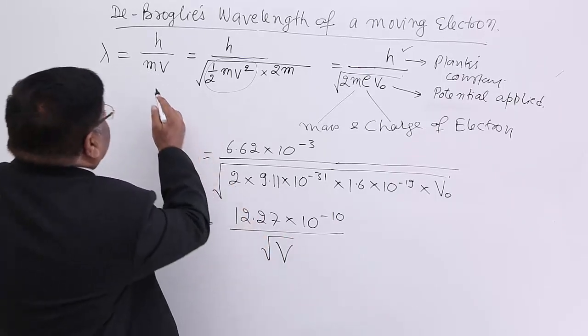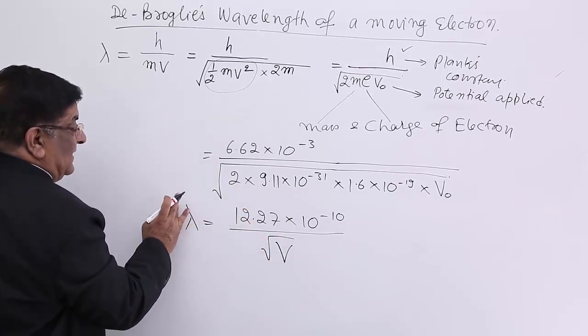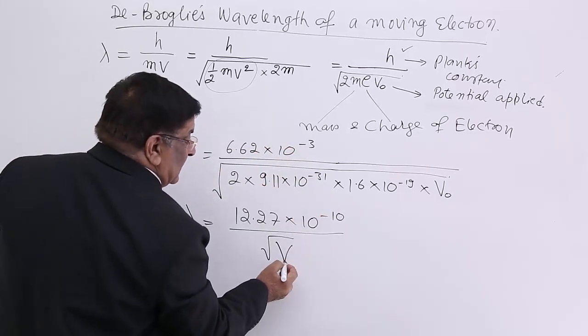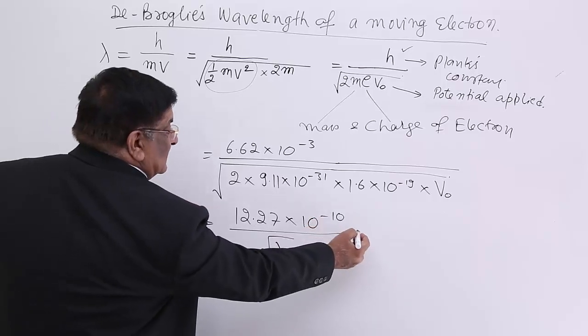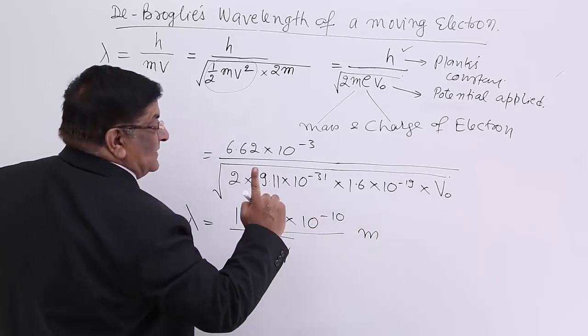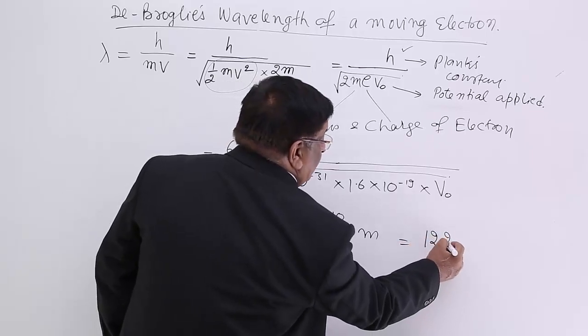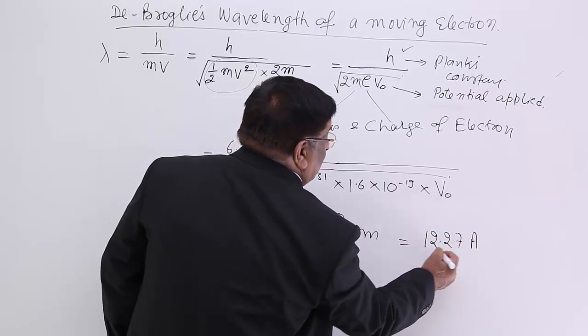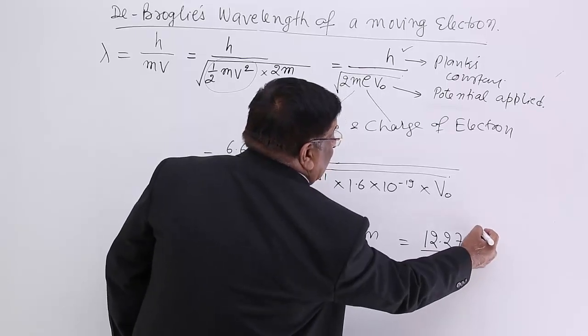This is the wavelength of an electron which has been excited under potential difference V. Now, 10⁻¹⁰ meter is angstrom. So we can remember it as 12.27/√V angstrom.